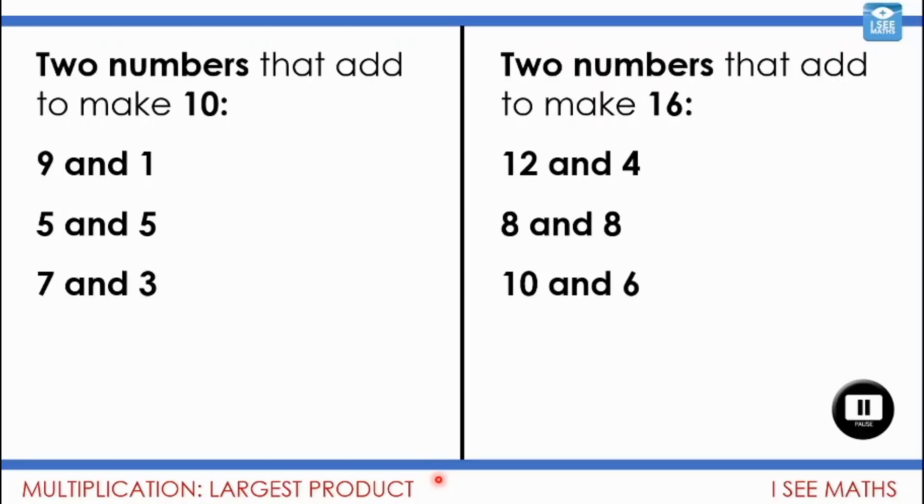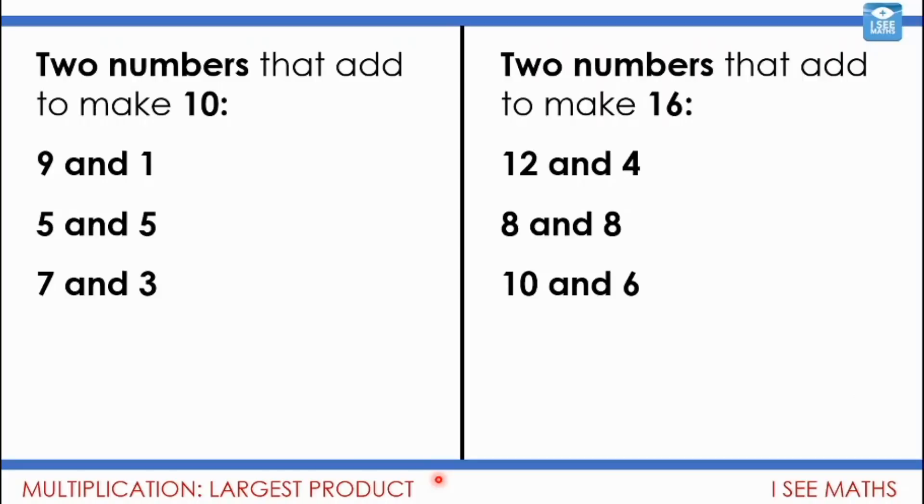I hope you've had the chance to do that. Well, let's have a little look. It would seem to make sense if numbers add to make ten that they would all multiply to give the same answer. But actually when we look at them, they're very, very different. So nine multiplied by one is nine. Five times five is twenty-five. Seven times three, twenty-one. Just the same here. Twelve times four is forty-eight. But eight times eight is sixty-four. Ten times six is sixty.